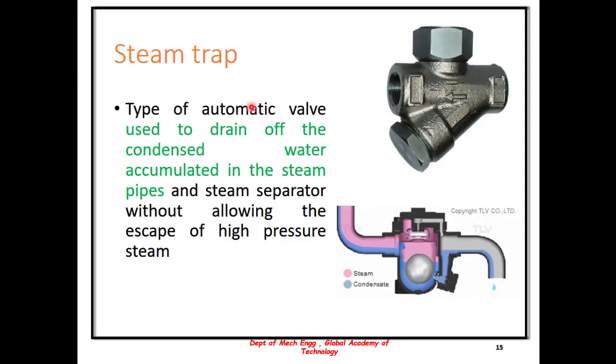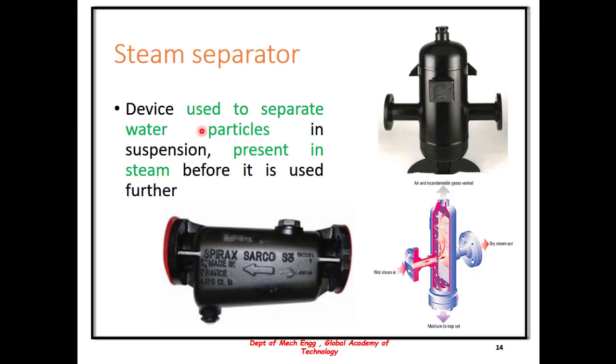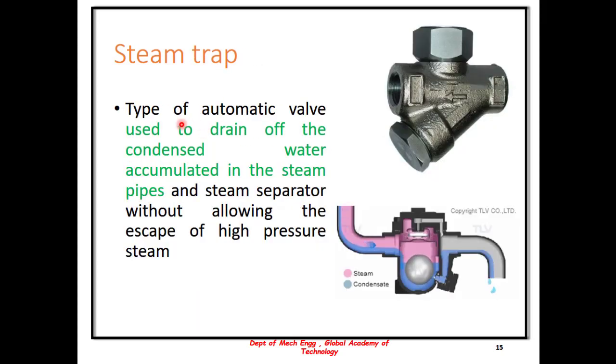A steam trap is very similar to a steam separator in its function. It is a type of automatic valve used to drain off the condensed water accumulated in the steam pipe. The steam trap does not allow the escape of high pressure steam. The steam and condensed water is separated and it is ensured that only the steam is made to pass further.